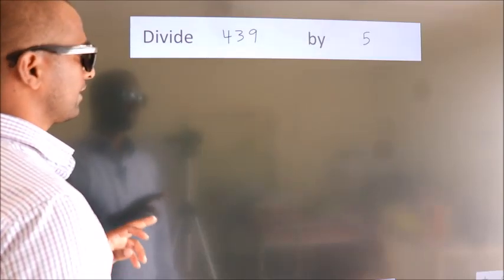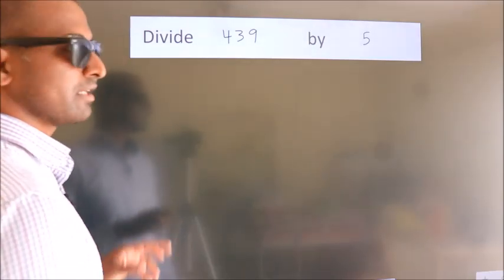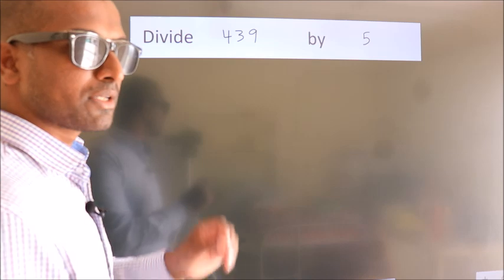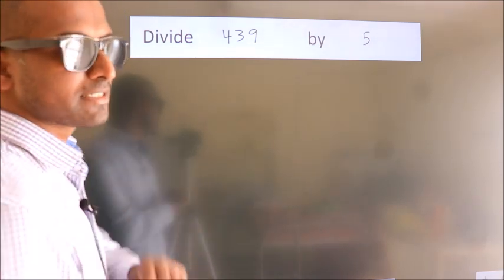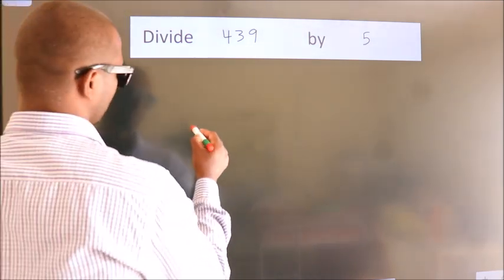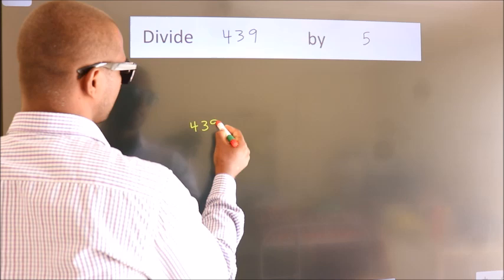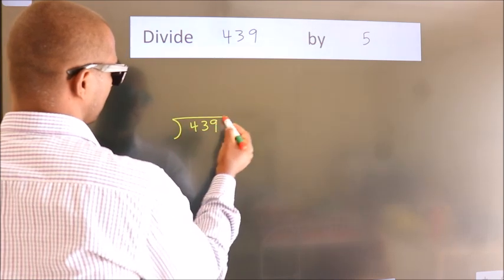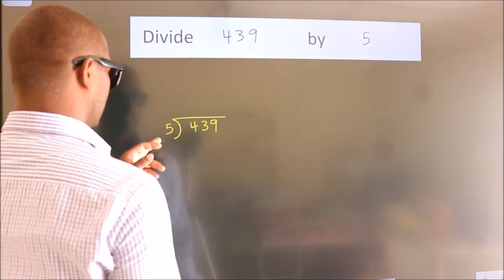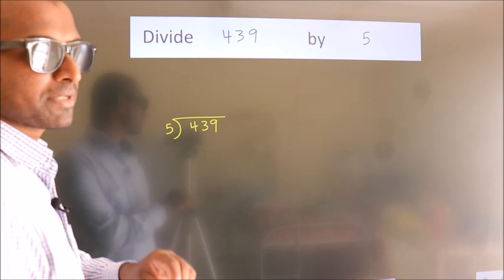Divide 439 by 5. To do this division, we should frame it in this way. 439 here, 5 here. This is your step 1.